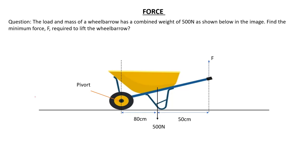For this question, the load and mass of the wheelbarrow has a combined weight of 500 N as shown in the image below. Find the minimum force F required to lift the wheelbarrow.